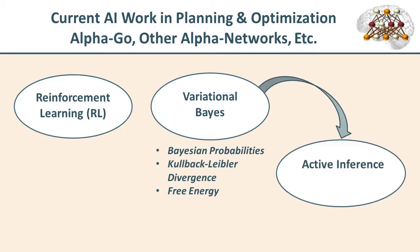Variational Bayes is also a foundational method for active inference, being proposed by Friston and colleagues as a new method with widespread potential — a front runner for planning and optimization and bringing systems into alignment with new situations. So once again, we're back to the need for statistical physics.